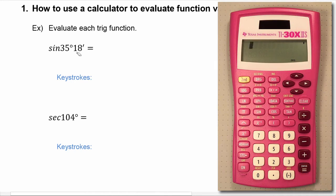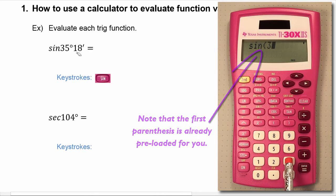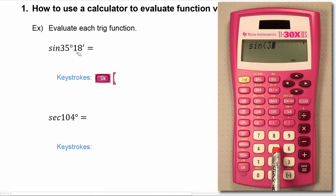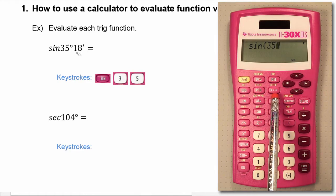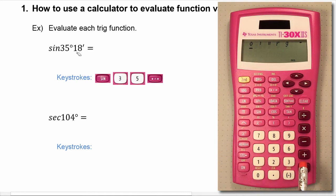Now we're ready to begin the calculation. We're going to enter our trig function which is sine, and we're going to input 35. Now to tell the calculator that it's degrees you have to hit the degrees, minutes, and seconds button. It defaults under degrees, so we'll only need to hit enter.